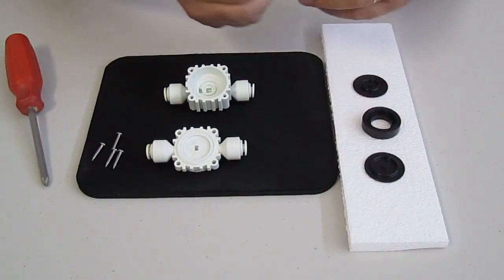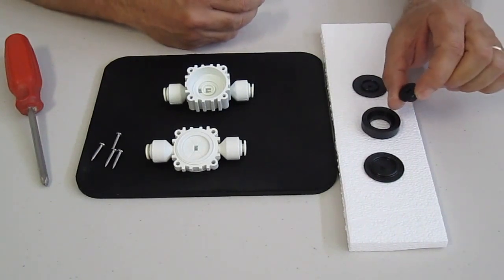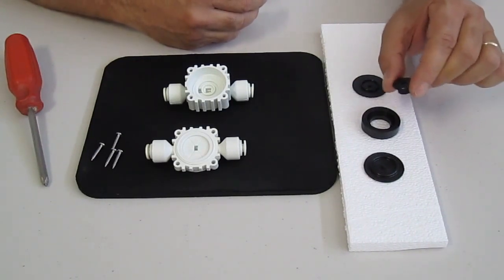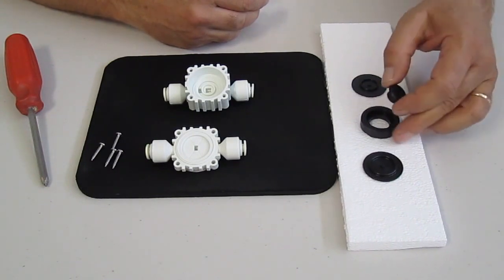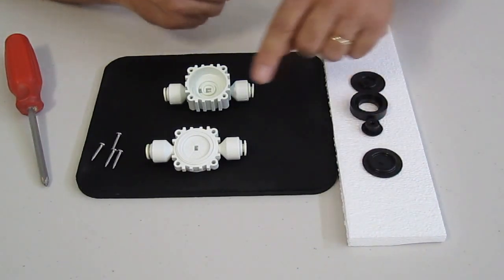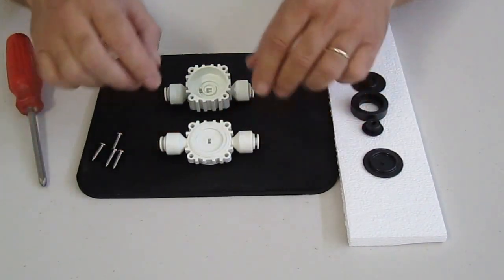You have the center piece, and then you have what we call the diaphragm or the piston. This is the actual valve that opens and closes on the unit. So I'm going to lay these out. Now let's take a look at the actual inner workings of the valve.